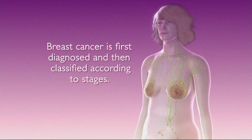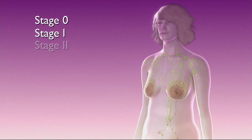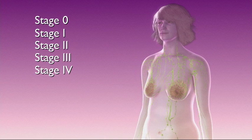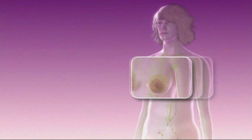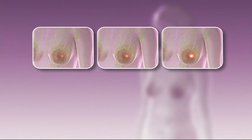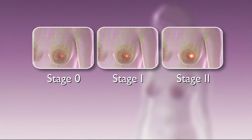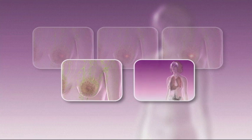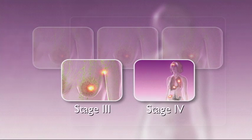Breast cancer is first diagnosed and then classified according to stages. These stages are 0 through 4. Early breast cancer is considered cancer that is not spread beyond the breast tissue or lymph nodes under the arm, and is classified as stage 0, 1, or 2. Advanced breast cancer is cancer that has spread in size or location and is present in other parts of the body, and is typically classified as stage 3 or 4.